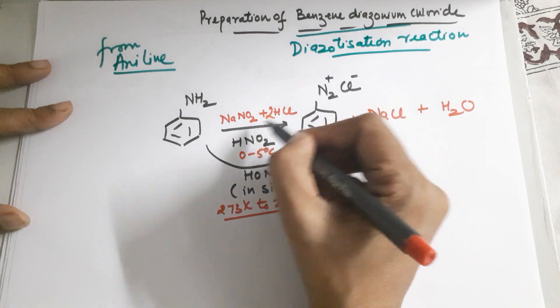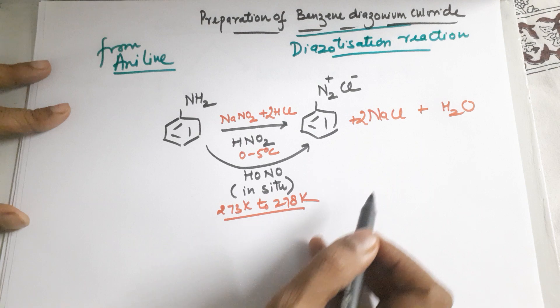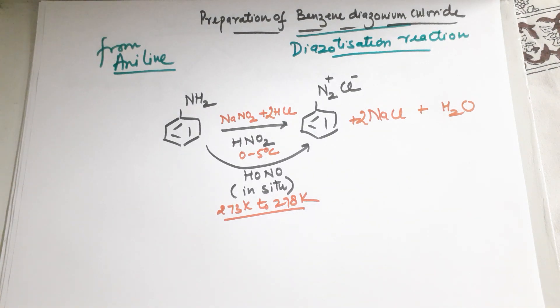Your by-products in this case are NaCl and water. Since you have two Cls, you put a two here, and your water would also be twice in this particular reaction.